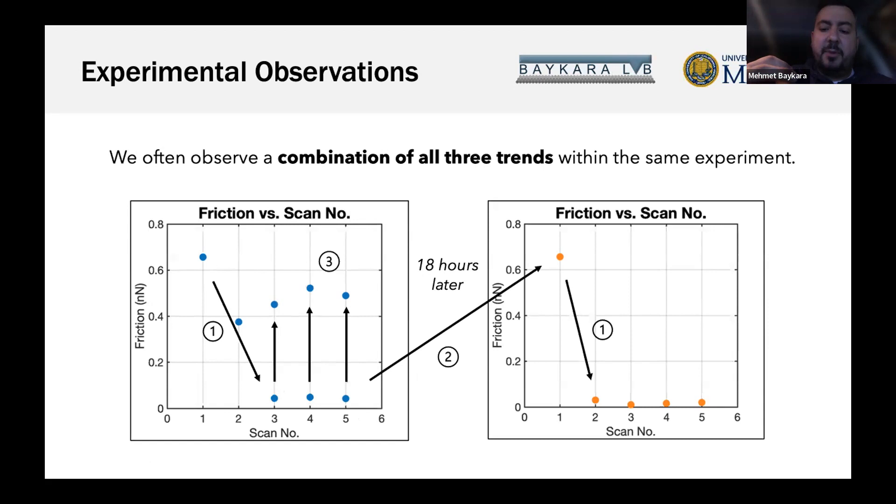These observations are possible because we're doing tip-on-top manipulations where we have control over the speed, distance, and direction. In our 2016 paper, we were just pushing islands from the side and they flew away. Now with this method, we can do experiments much more controllably and have much more data.